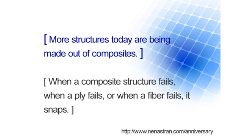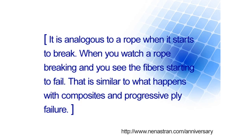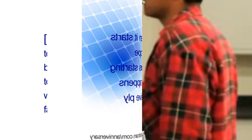More and more structures today are being made out of composites — entire aircraft. And it's a little unnerving because when metal fails, it tends to bend and bend before it ruptures. A bent wing is still a functioning wing for the most part. When a composite structure fails, when a ply fails or a fiber fails, it snaps. The fiber is gone. It's more analogous to a rope that starts to break — you can see the fibers starting to fail. That's what happens with composites, and that's progressive ply failure.